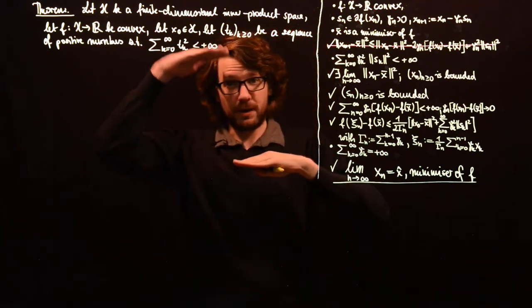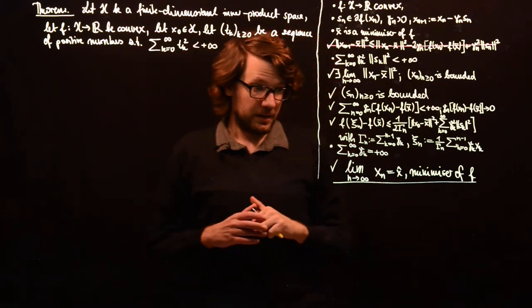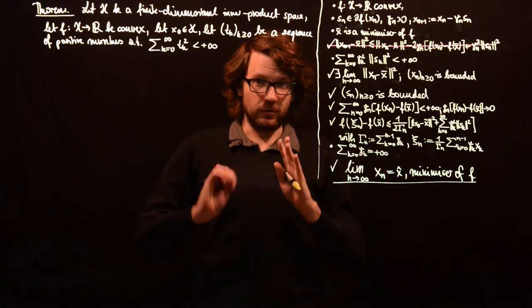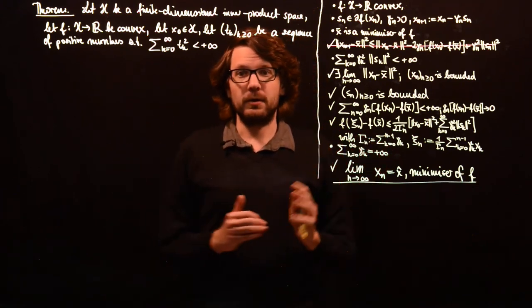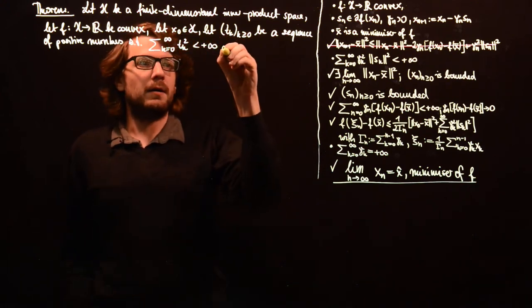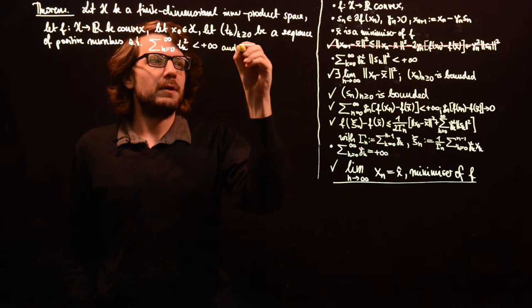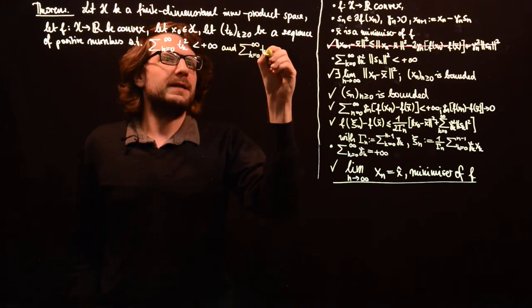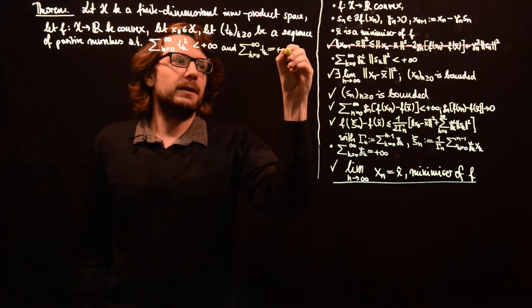And therefore, we know that we can estimate t_k over norm s_k by a multiple of t_k. So, it will suffice that the sum of t_k be plus infinity.